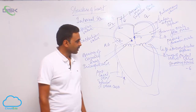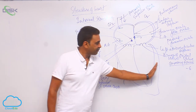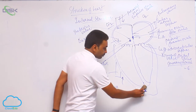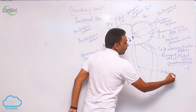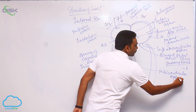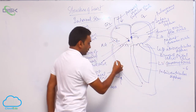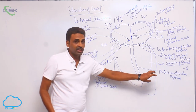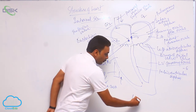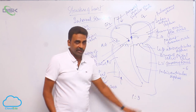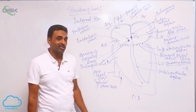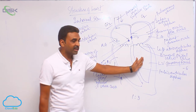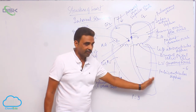The lower chambers are called ventricles. Both ventricles are separated by the interventricular septum. The right ventricle is less thick and the left ventricle is more thick — there is a ratio of 1:3. The wall of the left ventricle is 3 times thicker because the right ventricle pumps blood only to the nearby lungs, while the left ventricle pumps blood to all parts of the body and is therefore more muscular.